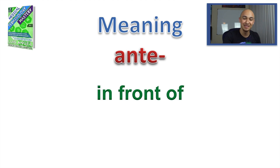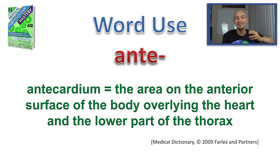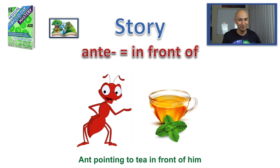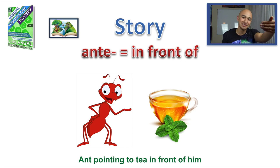The last prefix is ANTI, which means 'in front of.' The word used is anticardium — the area on the anterior surface of the body overlaying the heart and lower part of the thorax. The story is an ant with tea: there's a tea cup right in front of the ant and it's pointing at the tea cup in front of him. So ANTI means in front of.